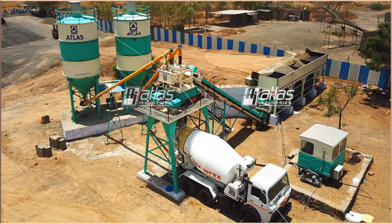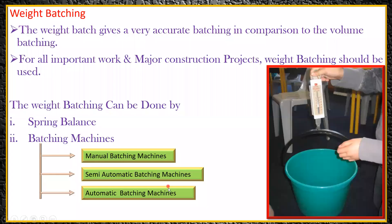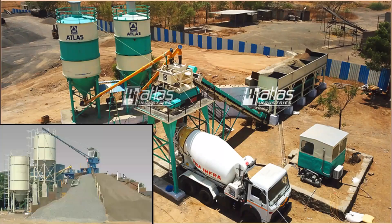This is called automatic batching. In the plant, you can see the coarse aggregate stored here, fine aggregate stored there, and cement stored in the big silos — cement cannot be stored openly, it must be stored in silos.